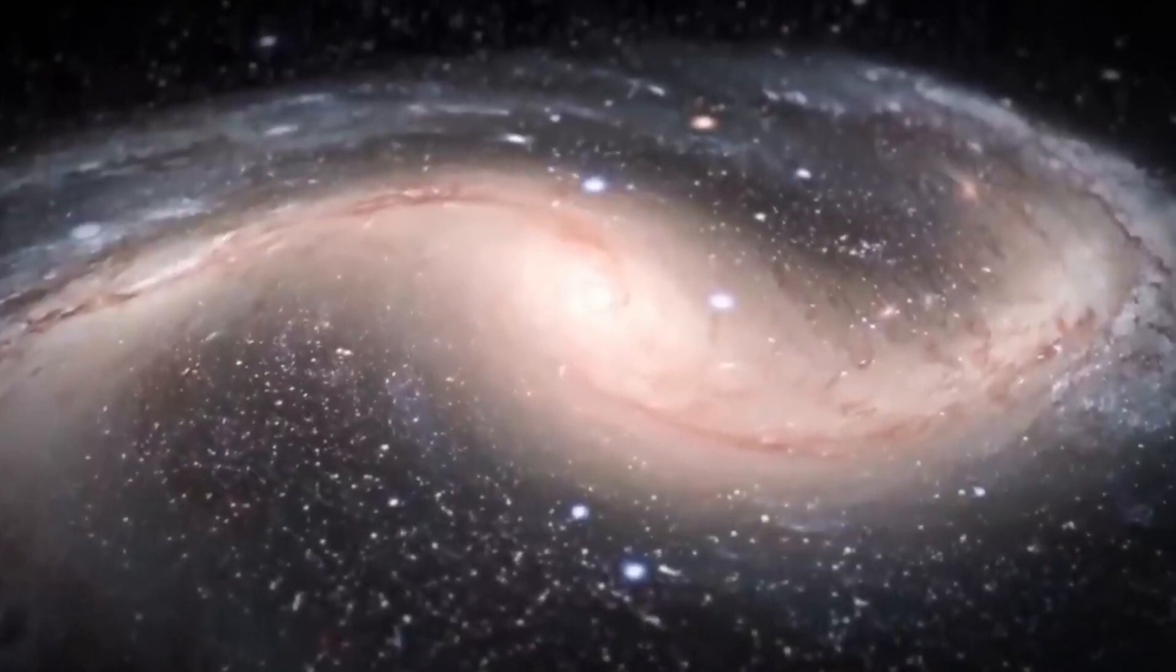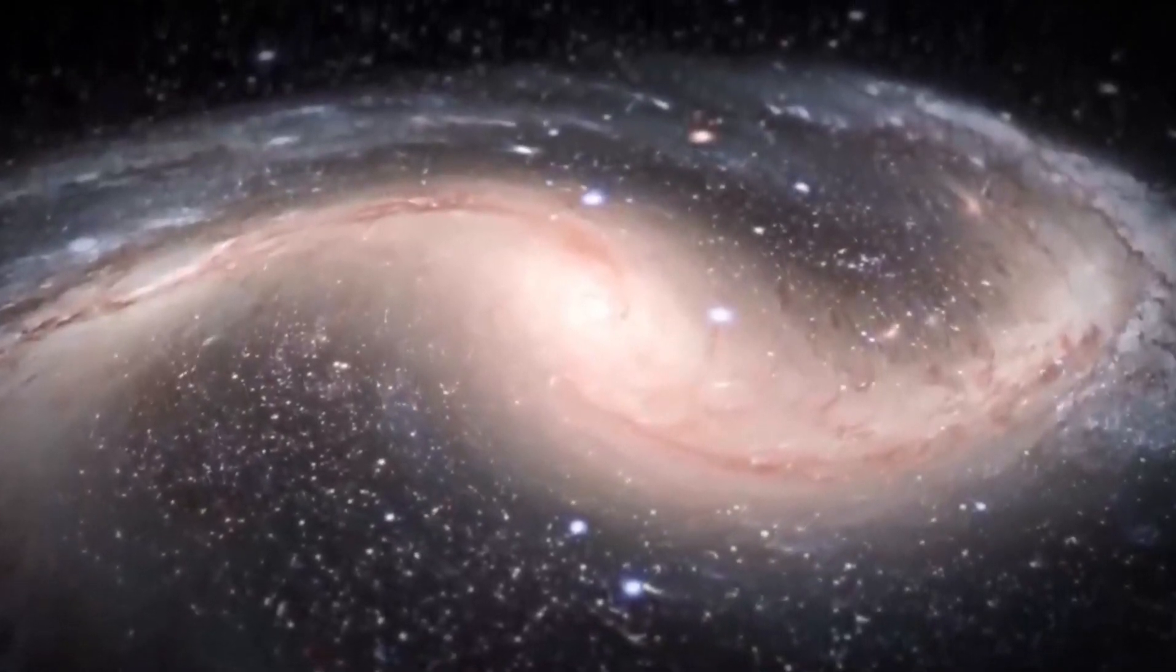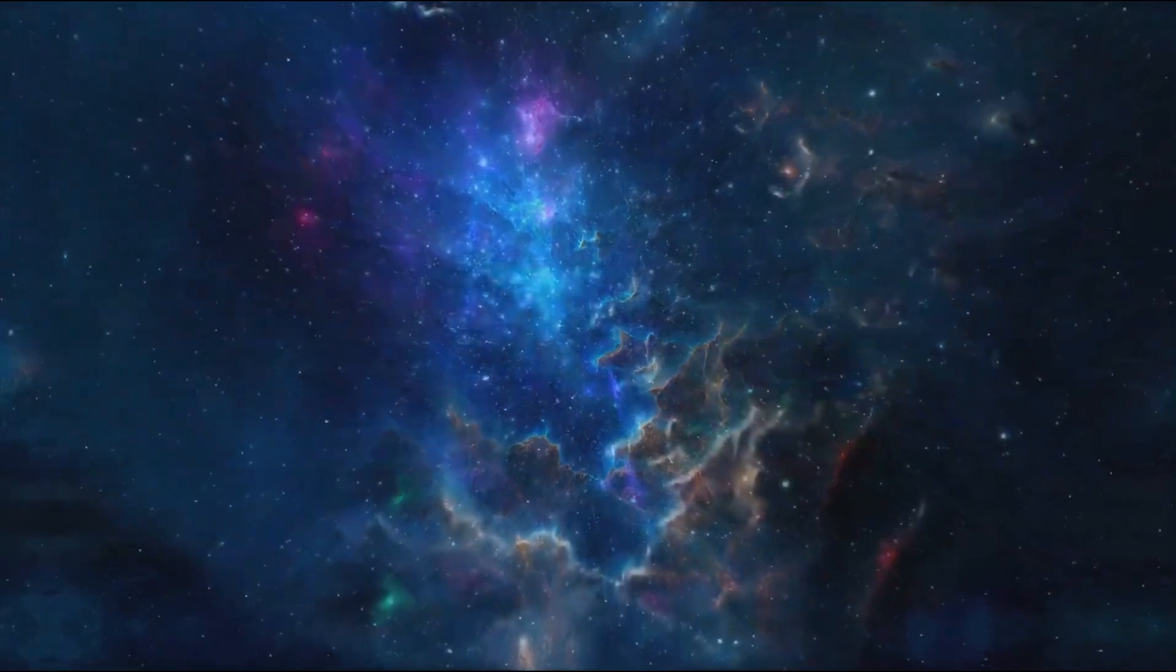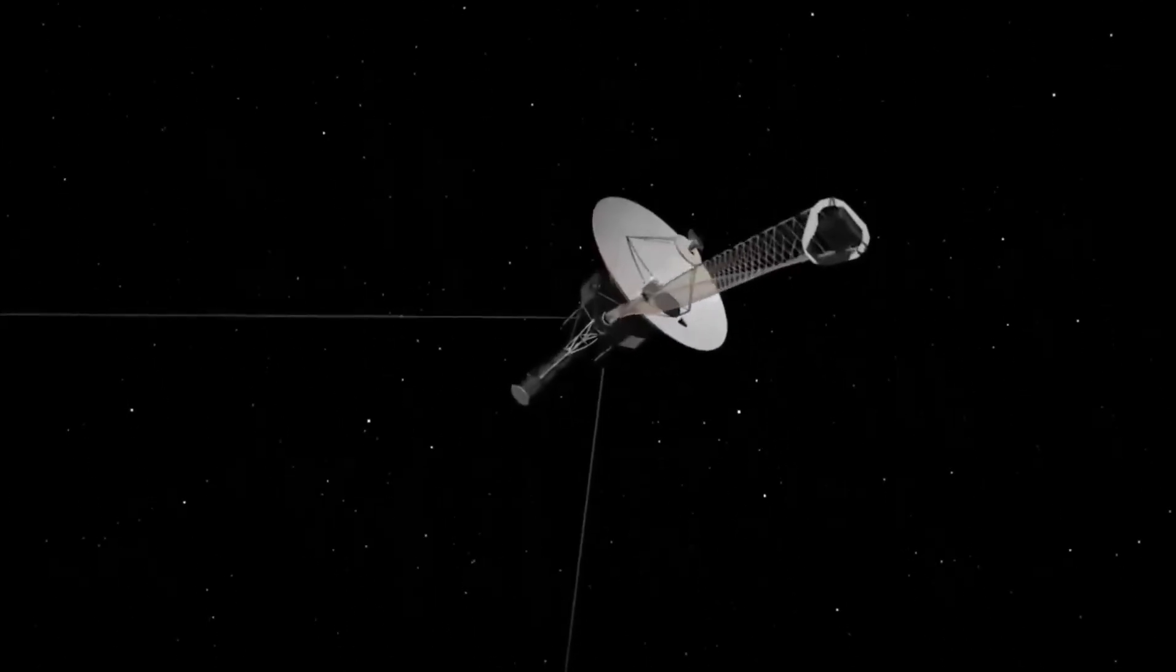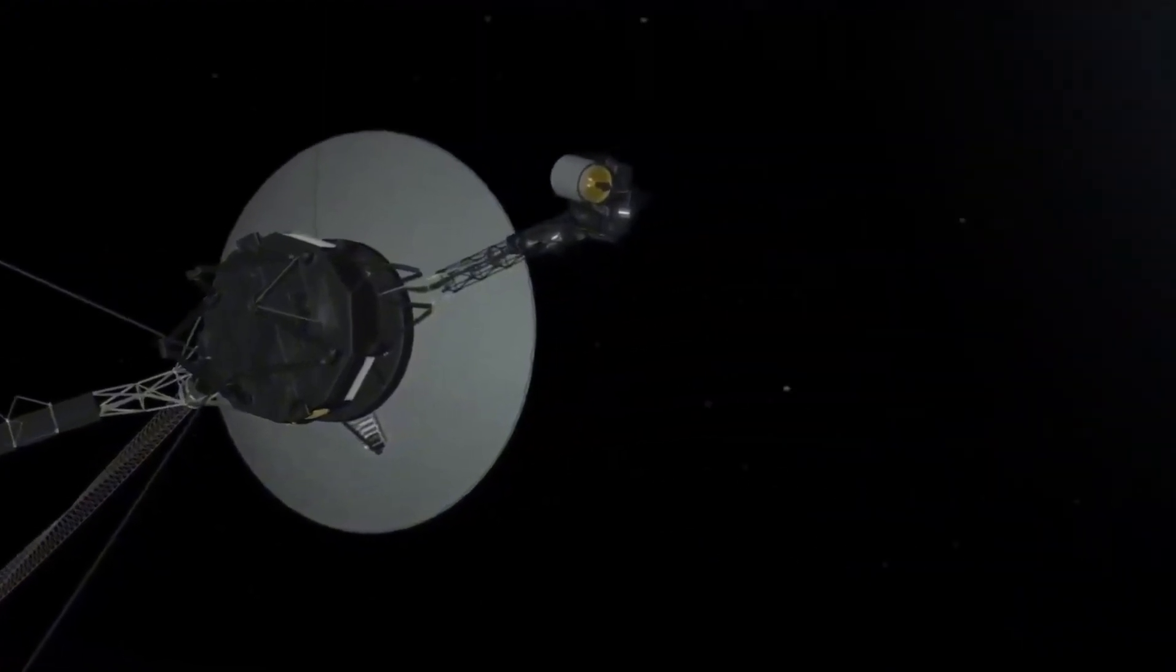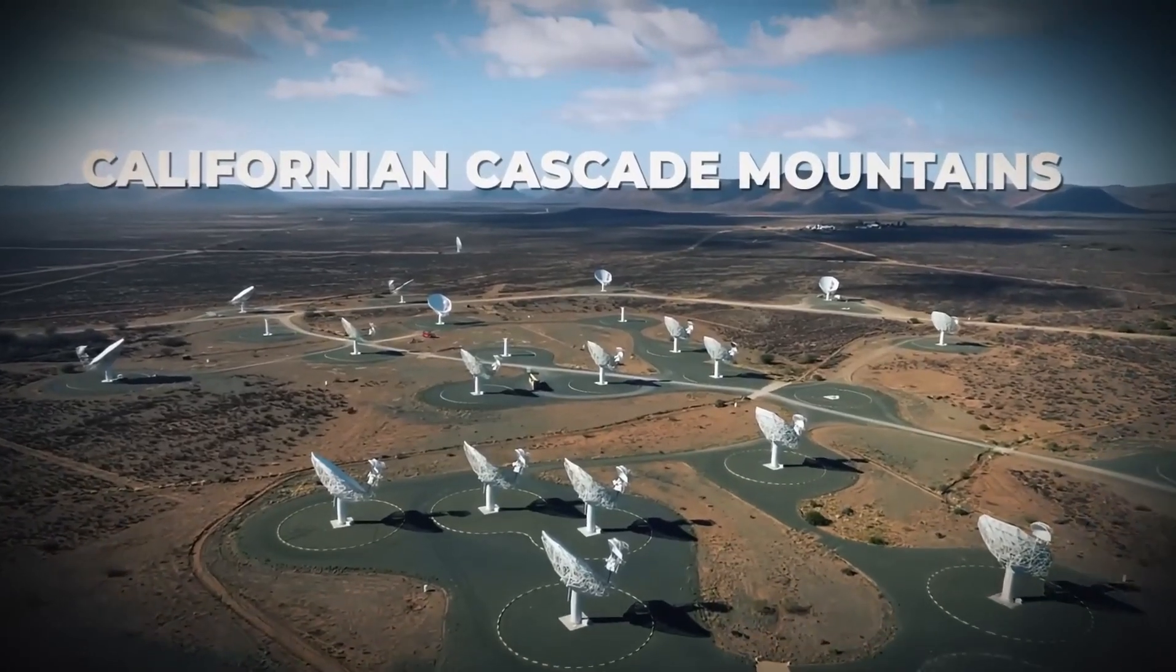According to atmospheric data, Titan may be the first planet in the solar system other than Earth where liquid may exist on the surface. Nitrogen, methane, and more complex hydrocarbons were also found, suggesting that primordial chemical processes would be conceivable on Titan.